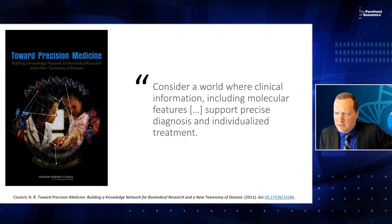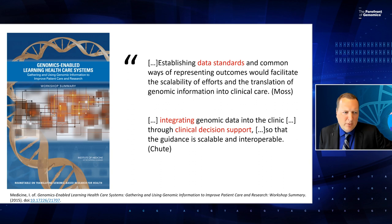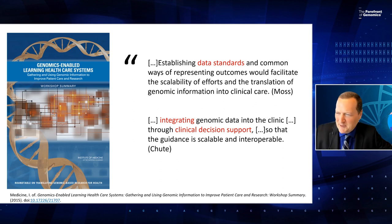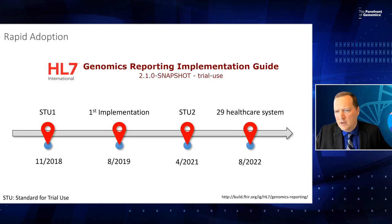When I talk about precision medicine with executives, I focus on the National Academies 2011 report quote: consider a world where clinical information, including molecular features, supports precise diagnosis and individualized treatment. I want to go back to the 2015 report, and Ken already did a fantastic job summarizing it. Two specific recommendations stand out: first, establishing data standards and common ways of representing outcomes to facilitate scalability and translation of genomic information into clinical care; and second, integrating genomic data into the clinic through clinical decision support so guidance is scalable and interoperable.